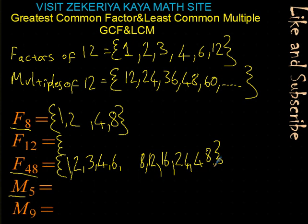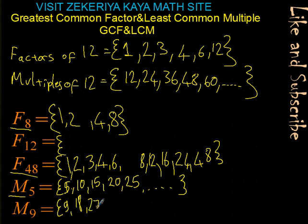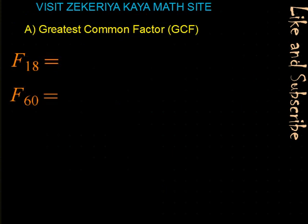Let's also do simple examples for multiples. Multiples of 5: 5, 10, 15, 20, 25 — and it continues. Multiples of 9: 9, 18, 27, 36 — and it goes on. Now let's start with the main topic: greatest common factor and least common multiple.